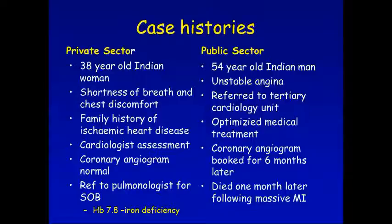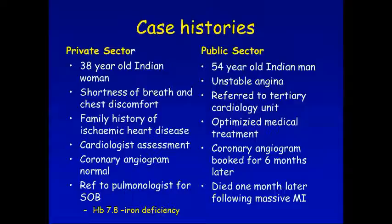Now let's take the next patient. I saw this patient in the public sector. This is a 54-year-old Indian man who had unstable angina — no question about it. He had ECG abnormality, family history, hypertension, and diabetes. We call that in South Africa the 'Indian syndrome' — ischemic heart disease, hypertension, diabetes, obesity, and often smoking. Metabolic syndrome. Any Indian who walks into your room over the age of 40, you have to think about that. From his primary care setting in the public sector, he was referred to the tertiary cardiology department.